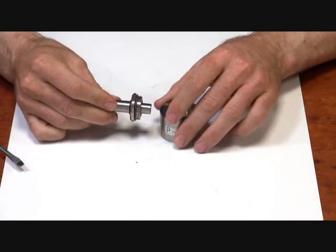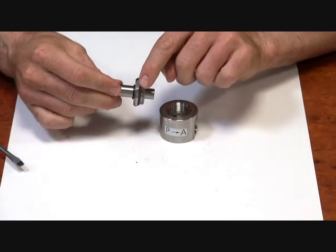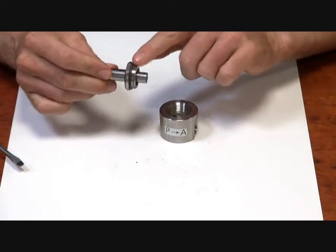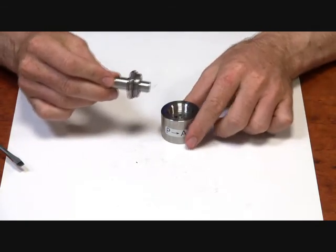You will notice on here, there is also a Viton sealing o-ring. This o-ring helps the operator seal onto the body of the valve.